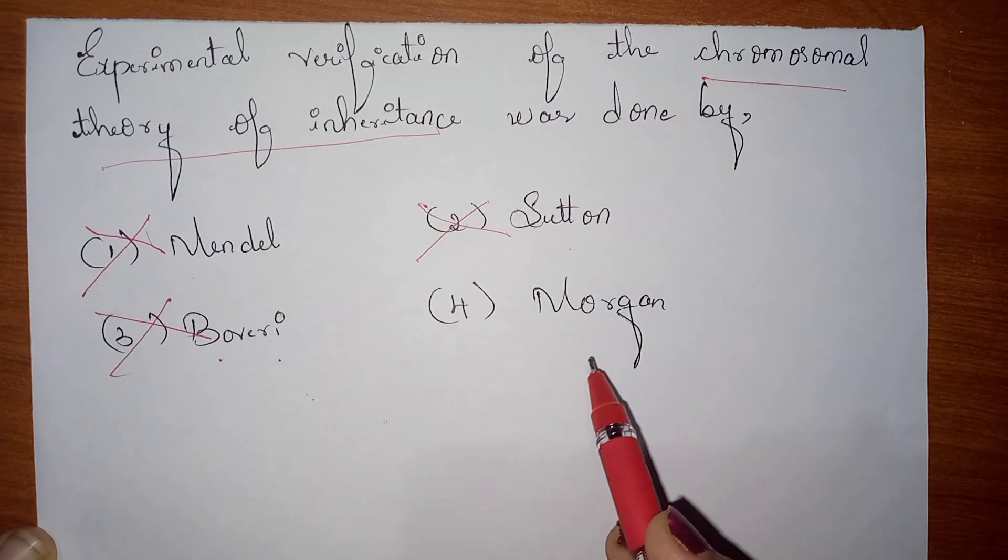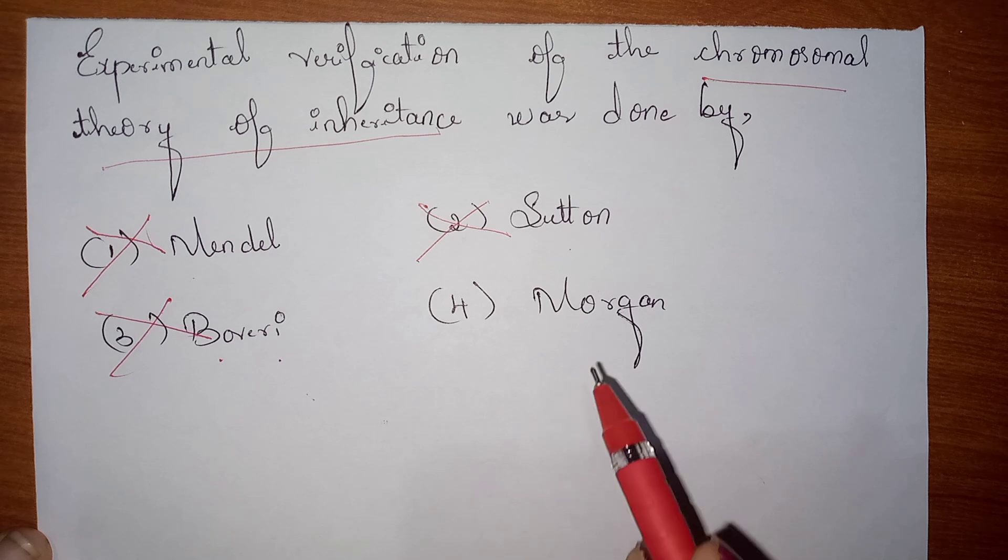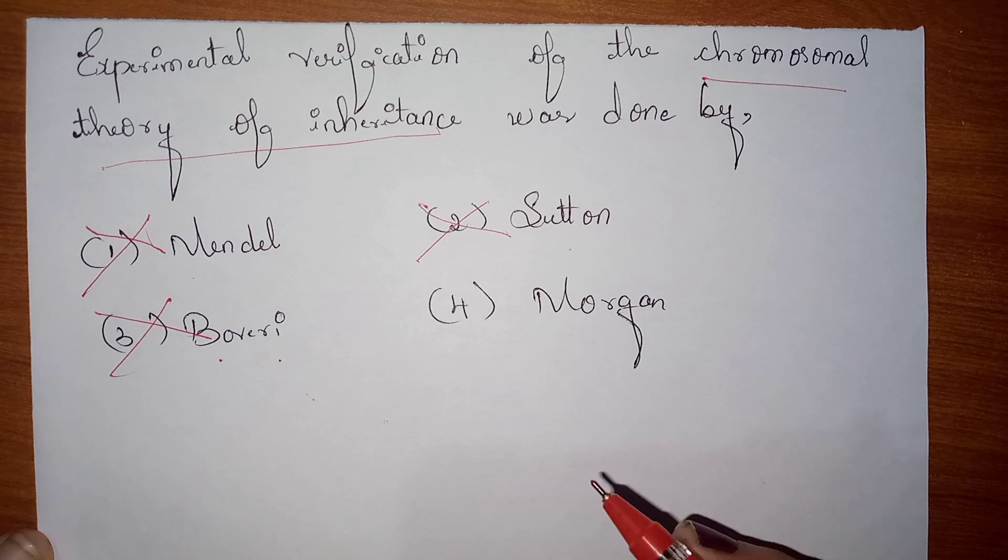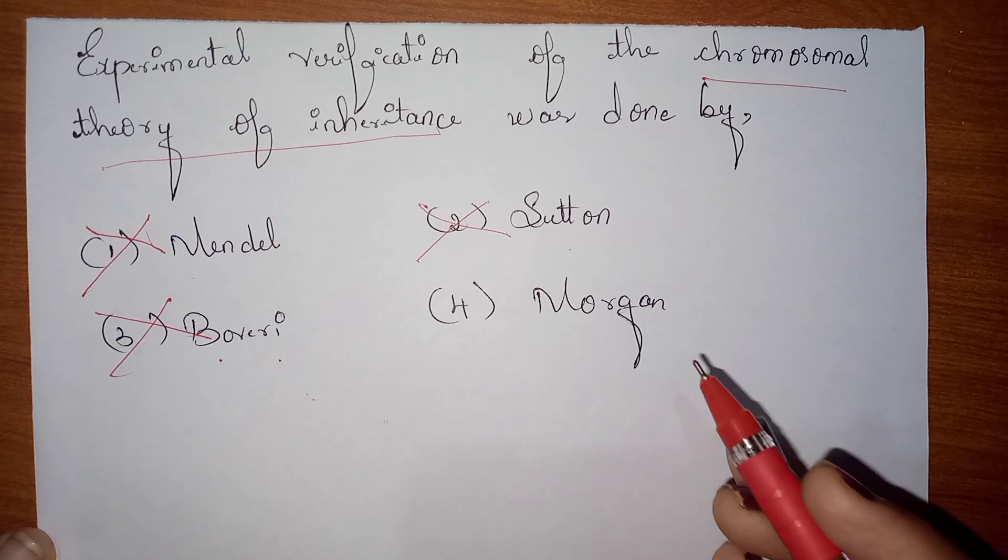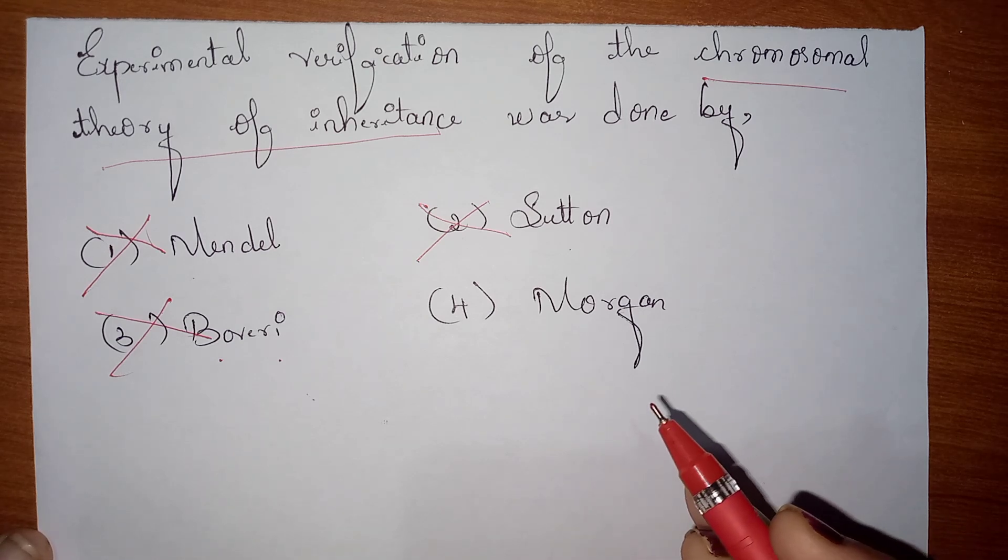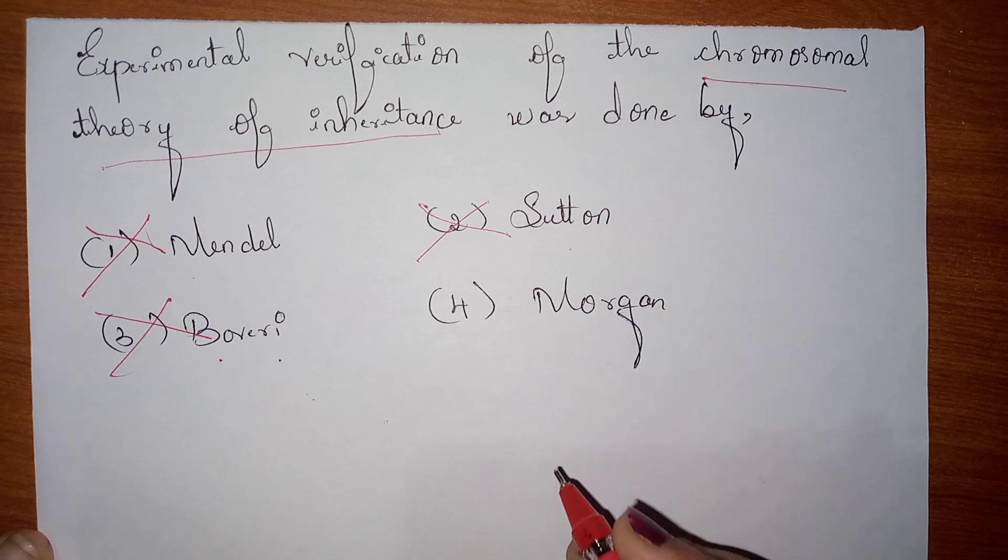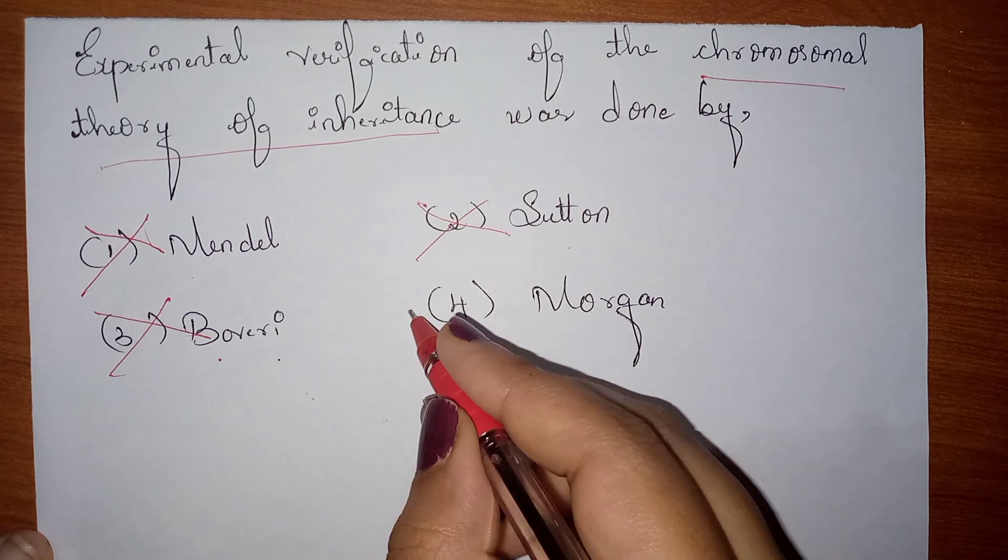Mendel had some experiments but it was not accepted by the society, so this is not the answer. And later on, T.H. Morgan, he used the Drosophila melanogaster to show how sexual reproduction gives rise to variations through this chromosomal theory of inheritance. So the answer is T.H. Morgan.